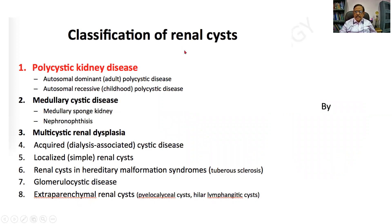How do you classify the cystic lesions of the kidney? There was a student who rattled off the full classification: polycystic kidney — either autosomal dominant or autosomal recessive; medullary cystic disease — which can be a medullary sponge kidney or nephronophthisis; multicystic renal dysplasia; acquired cystic disease in dialysis patients; simple cyst; hereditary malformations; glomerular cystic disease; and extraparenchymal renal cysts.